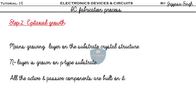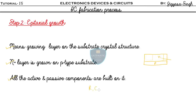In step two, we do the epitaxial growth, which means growing a layer on the substrate crystal structure. An n⁺ layer is grown on the p-type substrate. This n-type layer grown on the p-type substrate is called the epitaxial layer. All active and passive components — resistors, capacitors, transistors, diodes — are built on this epitaxial layer.